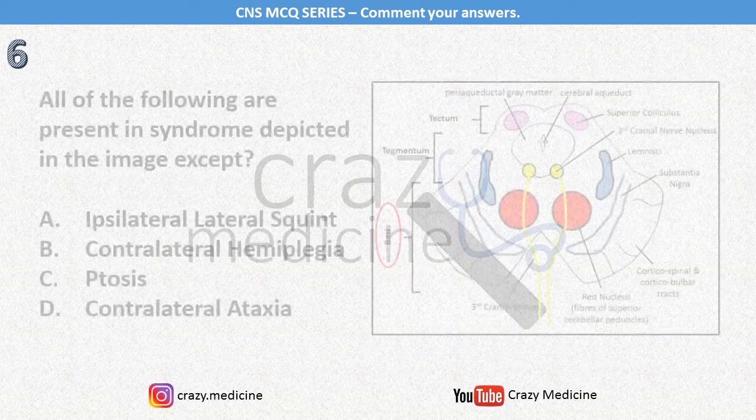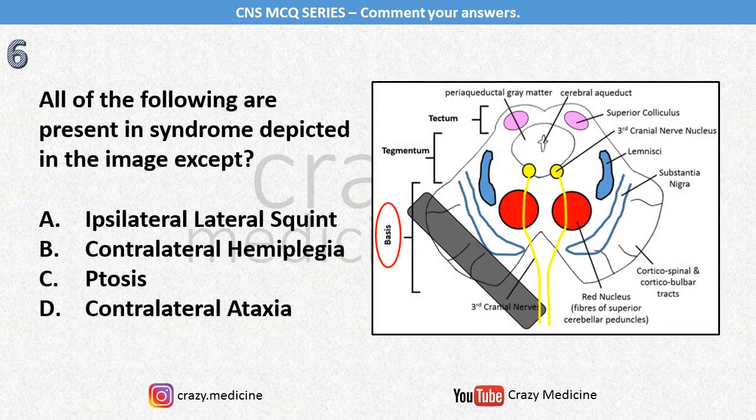Then sixth, all of the following are present in the syndrome depicted in the image except. This is an except-type question. As I have uploaded a labeled diagram, you can easily identify which part of the brainstem it is. In the solution video, I will discuss this particular syndrome and other syndromes related to it in detail.